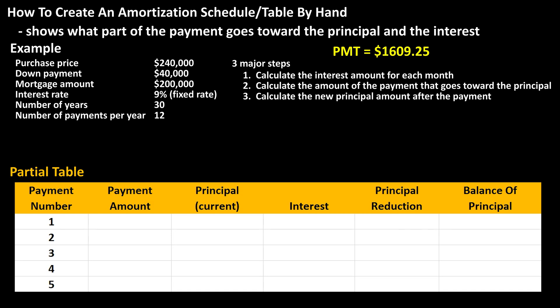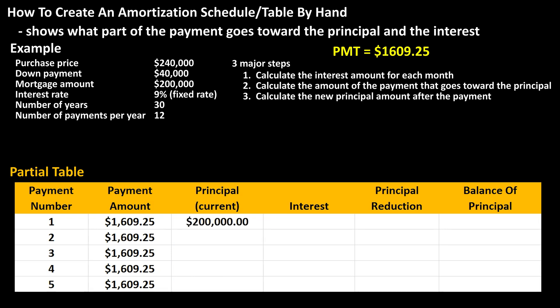The second column — payment amount — will always be the $1,609.25 payment we calculated a moment ago. The third column — current principal — will be the principal amount before the current payment number. So the current principal before payment number 1 will be $200,000.